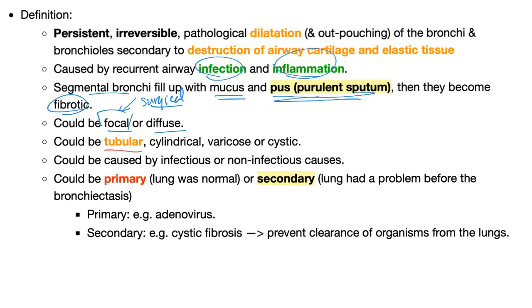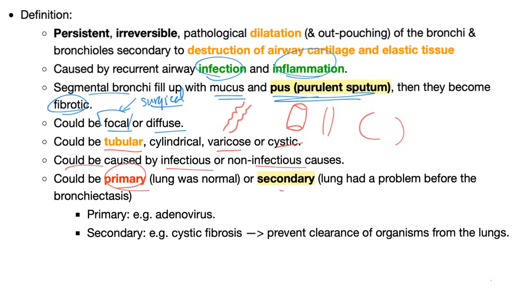Bronchiectasis could be tubular, cylindrical, varicose, or cystic. It could be caused by infectious or non-infectious agents, and could be primary or secondary.